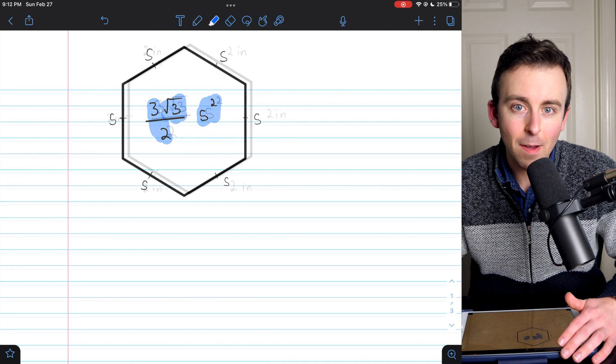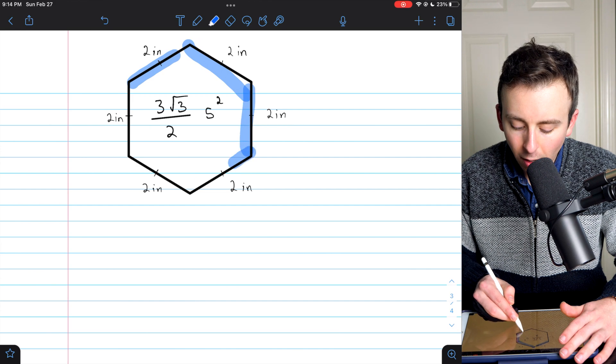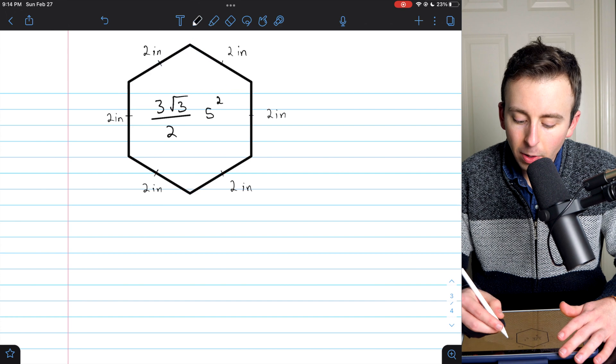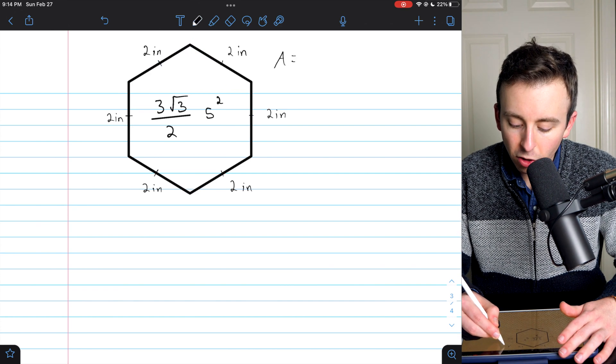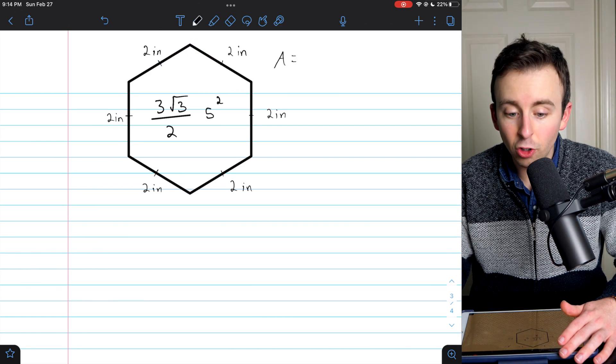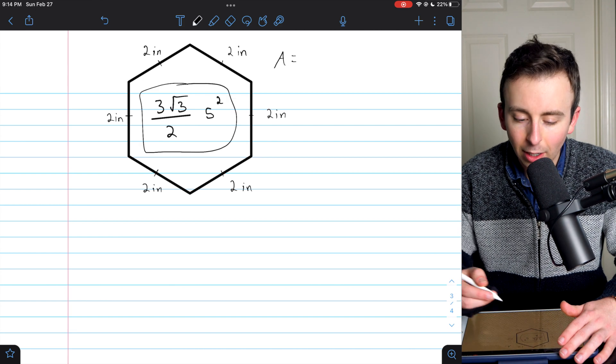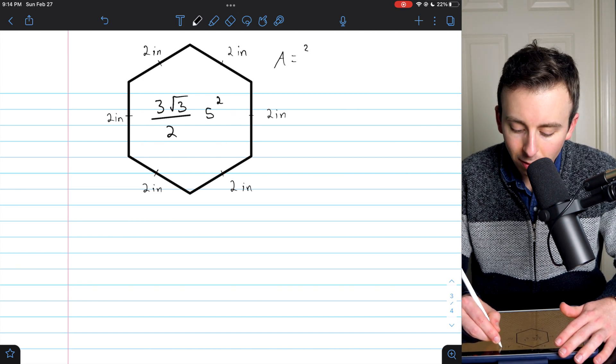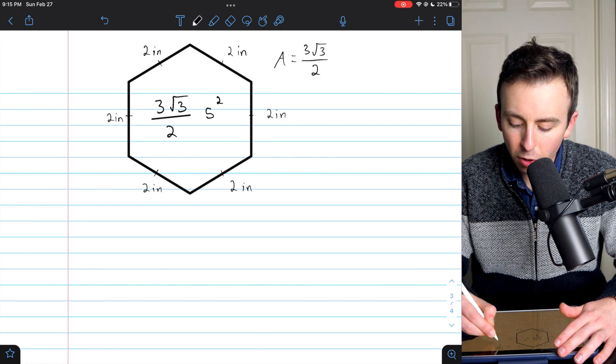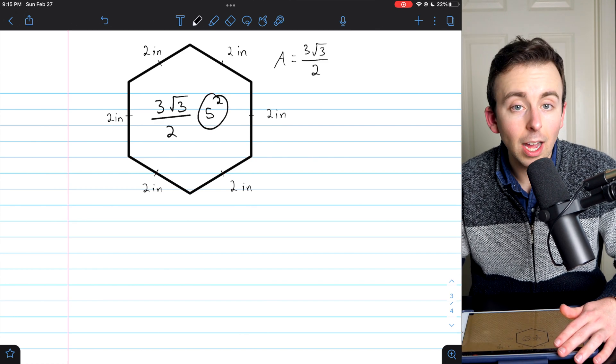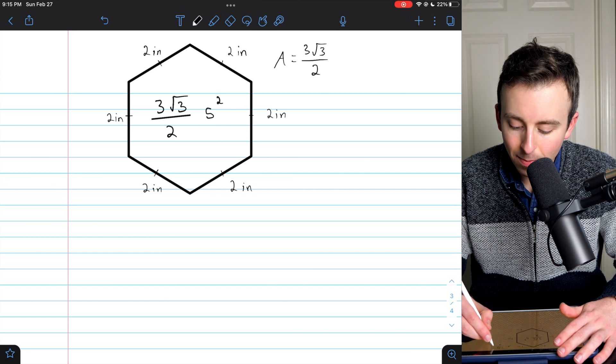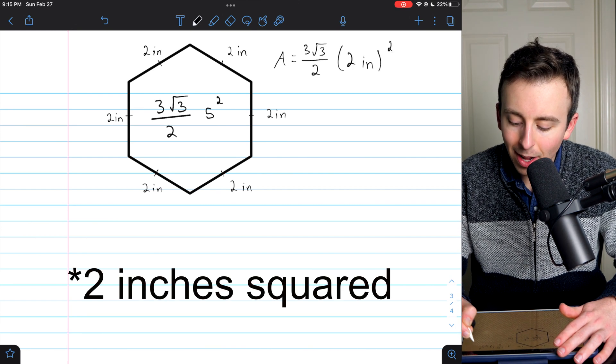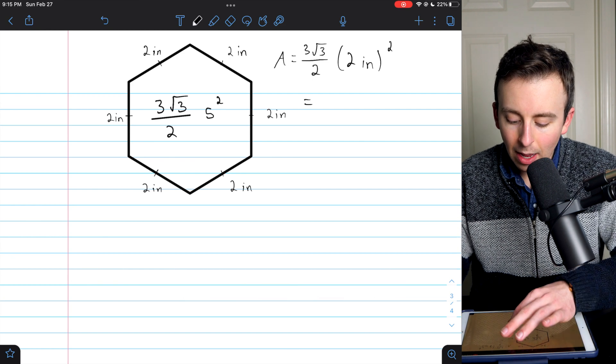Let's do a specific example. Let's say our regular hexagon has sides that are two inches long. What is the area? We just have to plug our side length two inches into the formula. That's three root three over two, then multiply by the side length squared. The side length is two inches, so we multiply by side length squared.